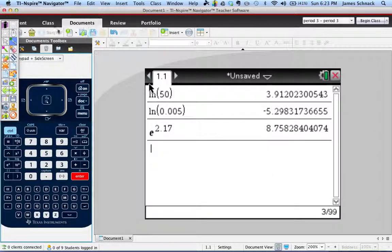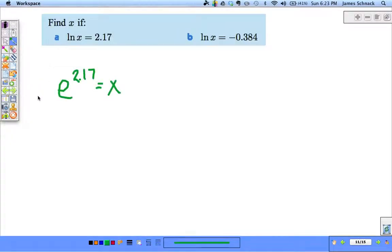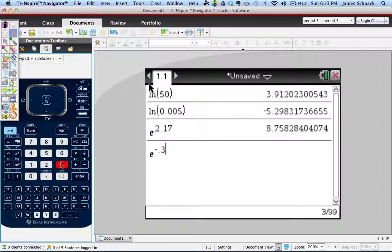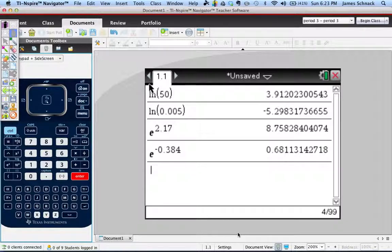x equals 8.758284040740 yada yada yada, continuing, continuing, going. Natural log of x equals -0.384. So this is base e, the exponent is -0.384. So again we go to our calculator. e^(-0.384). There we are, there we have it. x is equal to 0.681131427 yada yada, so on and so on.